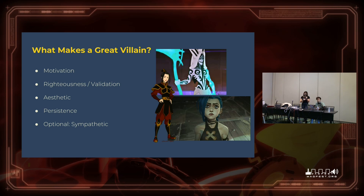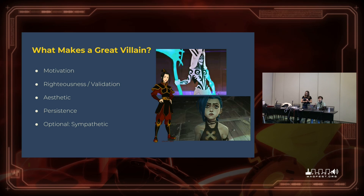We have their righteousness and their validation — why they feel valid and correct in doing what they do. This is usually where you get a lot of that distinctive personality between different villains, and that good flavor that everybody likes. Aesthetic, in the words of Megamind, is all about presentation. This is usually what people see first when they look at a villain — it's the super cool castle, the really excellent outfit, just the whole vibes. And there's also their persistence — their non-stop drive in pursuing their goal.